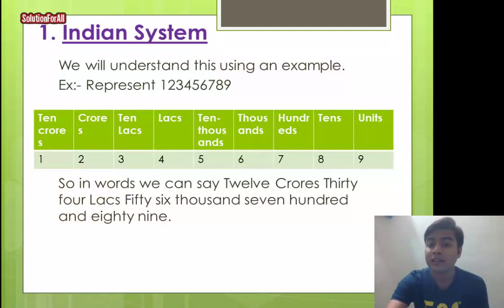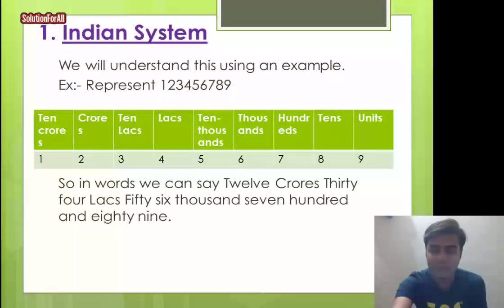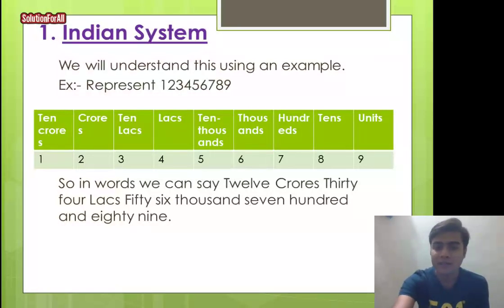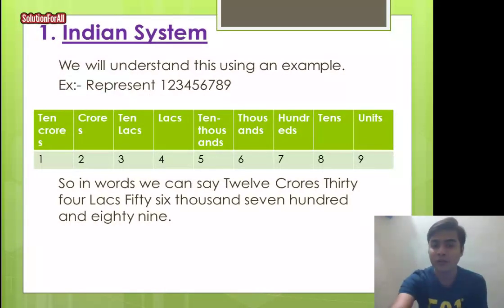We can also reverse this to find place values. For example, in the number 123456789, to find the place value of 4: it is at the lakhs position, so the place value is 4 × 10⁵, which equals 4 lakh. For 2, the place value is 2 × 10⁷, and for 1, the place value is 1 × 10⁸.